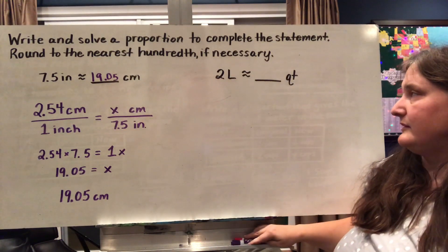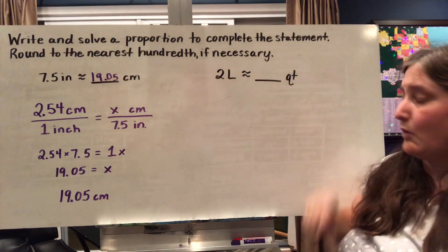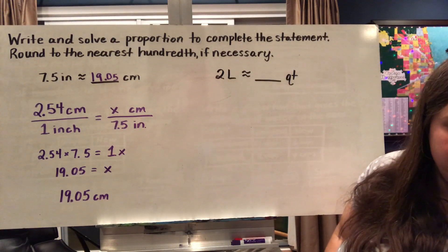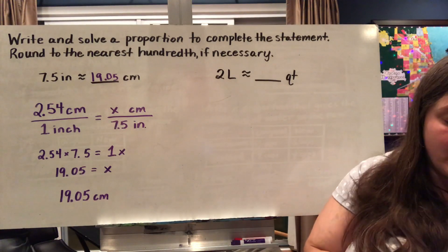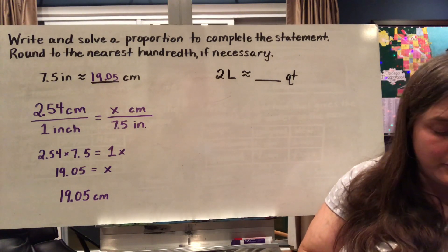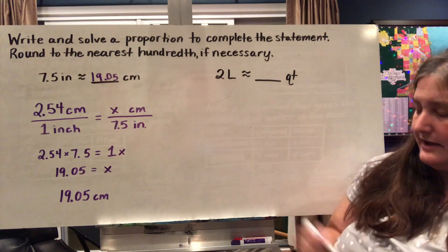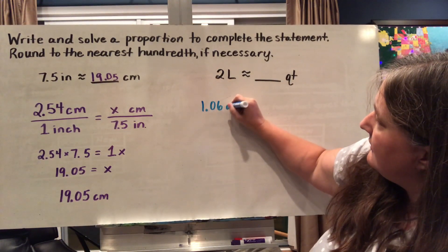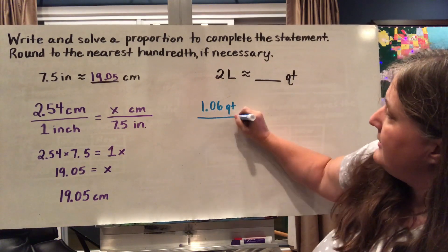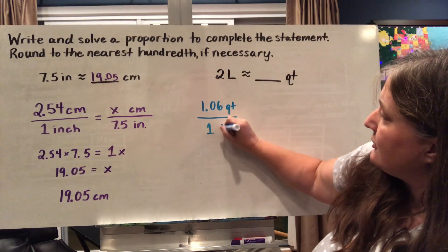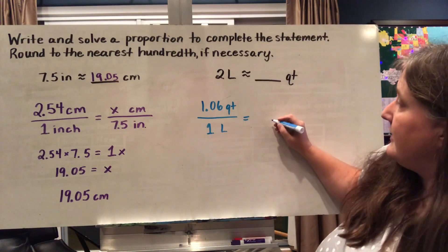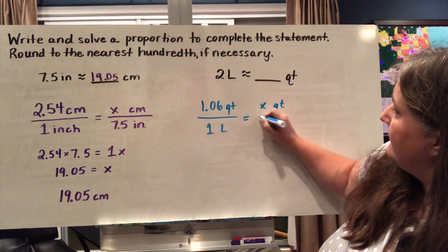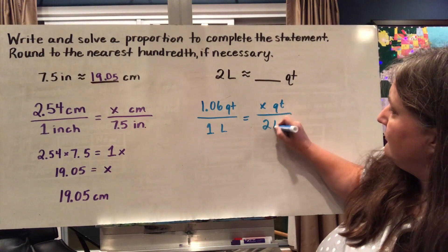So let's say we were trying to convert liters into quarts. So the first thing that I would have to do is do a little bit of Googling and figure out approximately how many quarts are there in a liter. So I did exactly that and there's about 1.06 quarts that make up one liter. So I'm going to set that equal to what I have here. I don't know how many quarts. I'm going to call them X quarts. And I've got two liters.